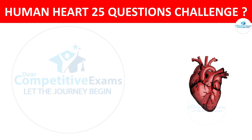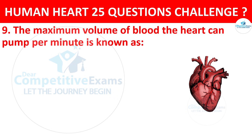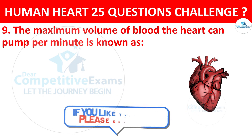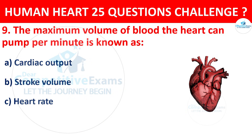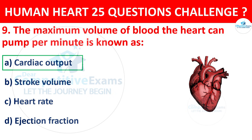Question number 9. The maximum volume of blood that the heart can pump per minute is known as? Options: Cardiac output, Stroke volume, Heart rate, or Ejection fraction. Correct answer is A, that is Cardiac output.